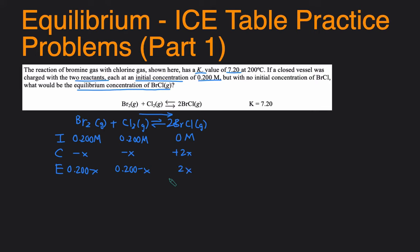Now that the ICE table is complete, let's set up the KC expression. So KC would just be concentration of products over reactants. So it will be concentration of BrCl squared because there's a coefficient of 2, divided by the concentration of reactants, Br2, multiplied by the concentration of Cl2.